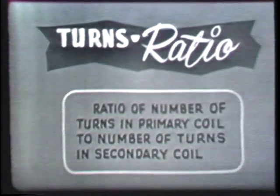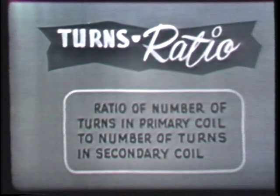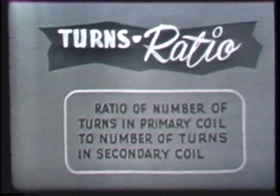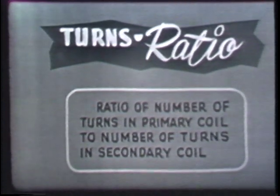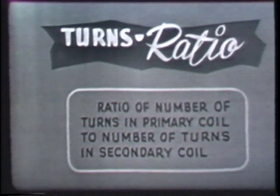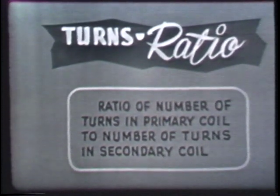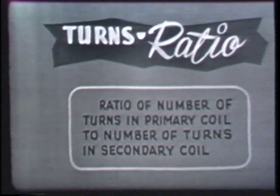The transformer can step a voltage up or it can step it down. The voltage increase or decrease is determined by the turns ratio of the particular transformer. The turns ratio is the ratio of the number of turns in the primary coil to the number of turns in the secondary coil.